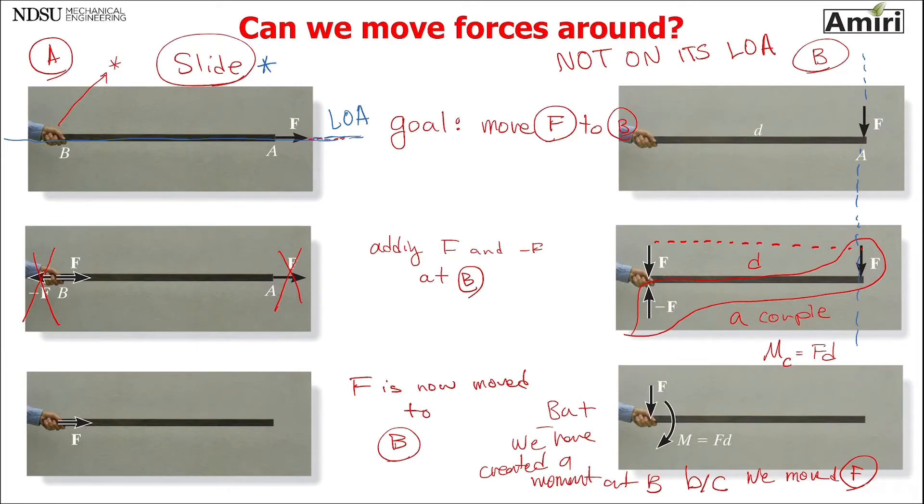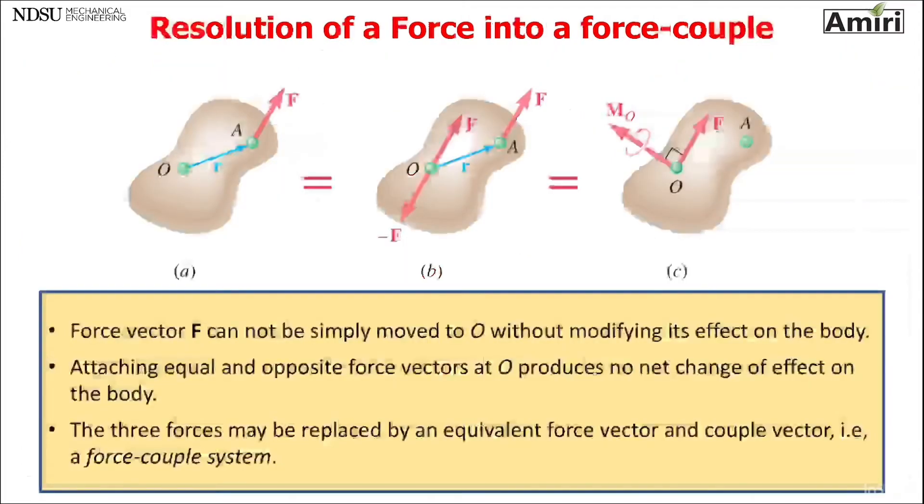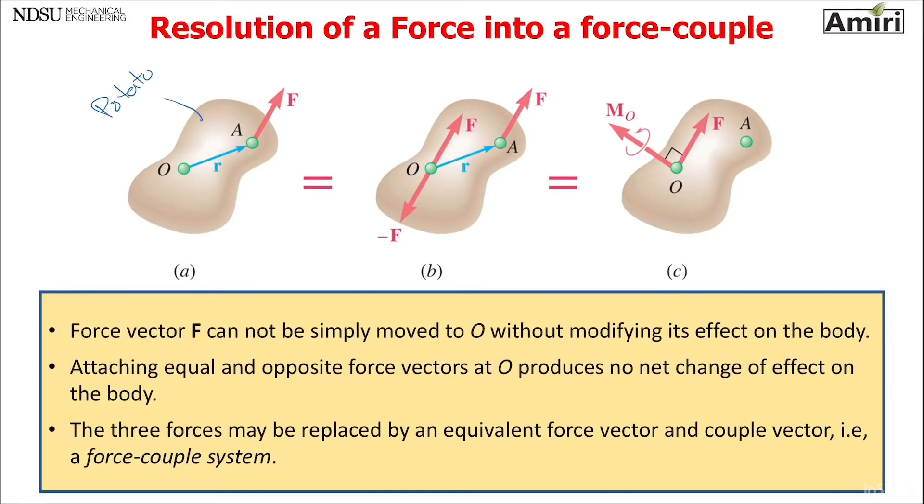So recall force is a sliding vector, means it can slide on its line of action. So here's kind of like a general representation. Again, this is my potato. I have force F and I would like to move it around and put it at a different point. And here's kind of like the beam, but in a 3D format. So I added plus and minus F at O. Again, the goal is move F to O.